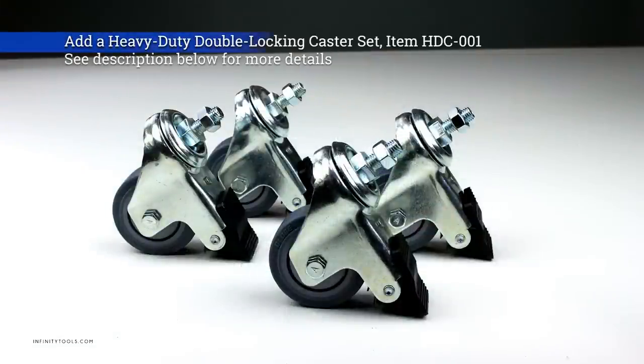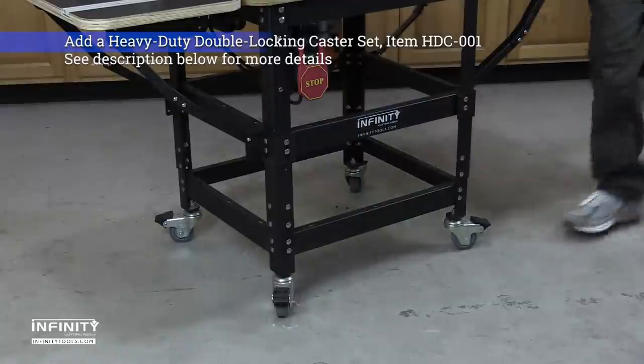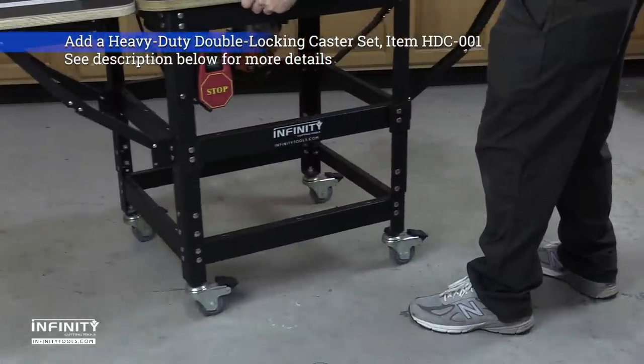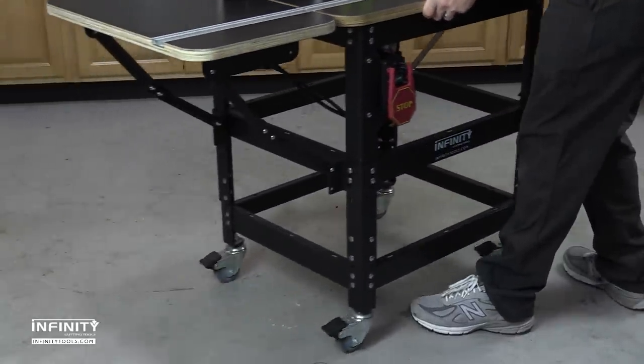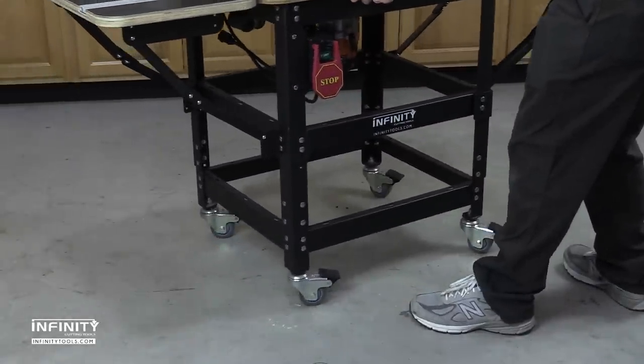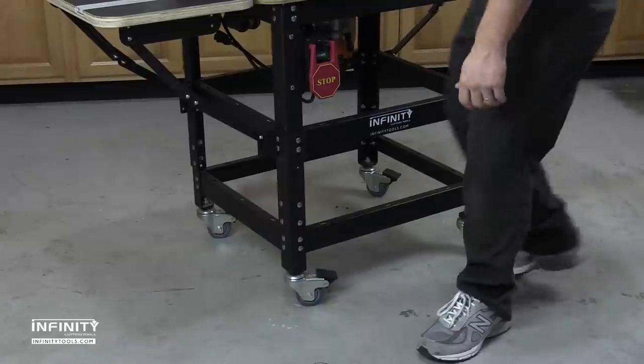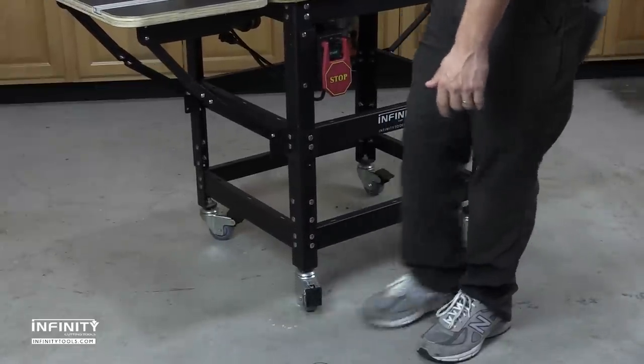To make your router table mobile, add our heavy-duty double-locking casters. They have 3-inch wheels that roll easily over rough or sawdust-covered surfaces. Each set supports up to 700 pounds and has a foot pedal that locks both the rolling and swiveling function so you don't have to sacrifice stability for mobility.